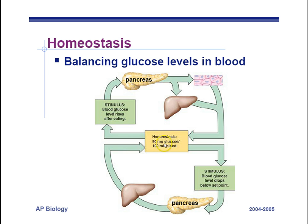Here we have blood glucose at 90 milligrams, and let's say that we eat some food — a bag of M&Ms. Your blood glucose levels are going to rise after you digest it. And as a response, your pancreas is going to release insulin. Insulin is going to target the liver and the cells of your body. As a result of insulin opening up protein channels, we're going to have glucose enter the liver and be stored as glycogen, lowering our blood sugar.